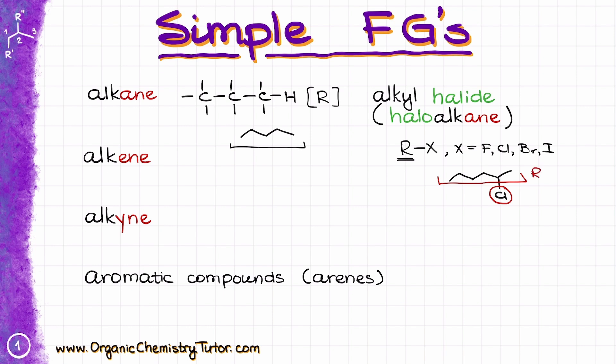The first actual functional group we are going to talk about is an alkene. Alkene is a carbon-carbon double bond. Whenever we are looking for an alkene in a molecule, we're always going to be looking specifically for a double bond that is not attached to any other functional groups. I can draw something like that, and I have my double bond right over here, connected to the rest of the molecule.